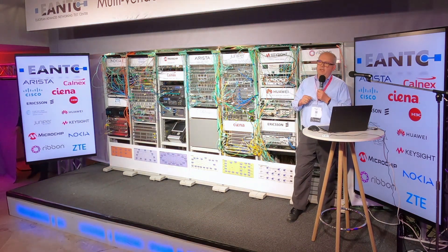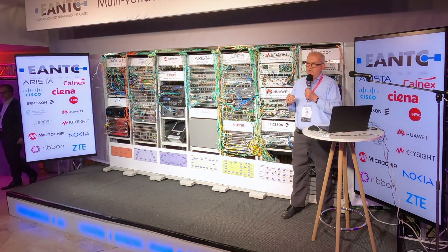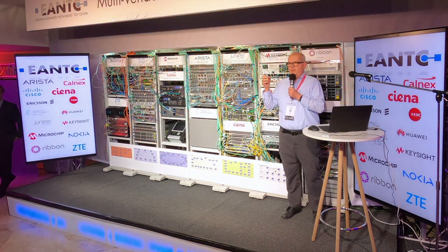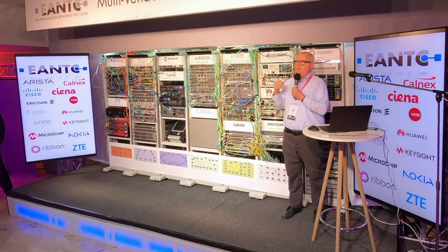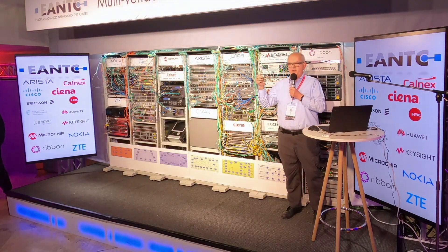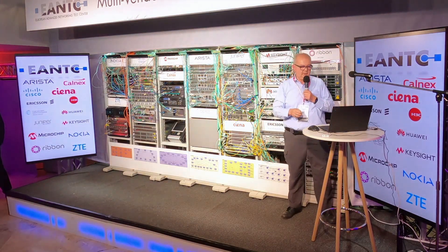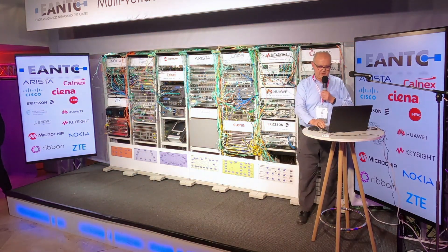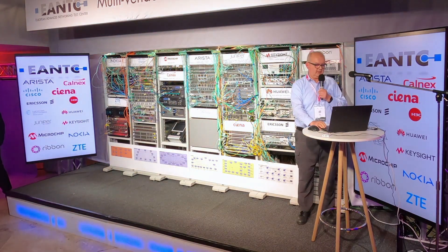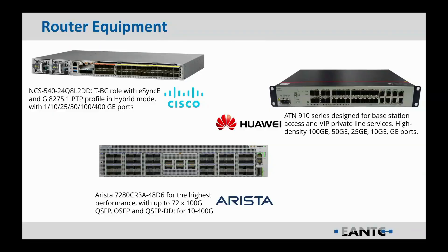We also have from Calnex an SD Ignite device, and that's been used to introduce some asymmetry into a network link so that you can see us measuring the asymmetry and then how we can look to remove that asymmetry if we have it in the network. As part of the topology, we have six boundary clocks from six different vendors.